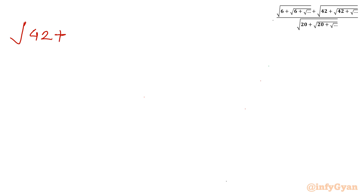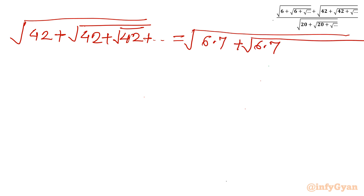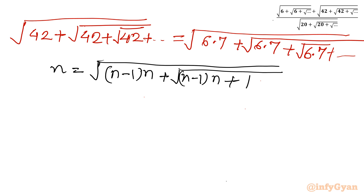Similarly for 42: square root of 42 plus square root of 42 up to infinity. We write 42 as 6 times 7, so we have square root of 6 times 7 plus square root of 6 times 7 and so on. The recursive formula gives n equals the largest successive factor. Here n minus 1 equals 6 and n equals 7, so the result is 7.